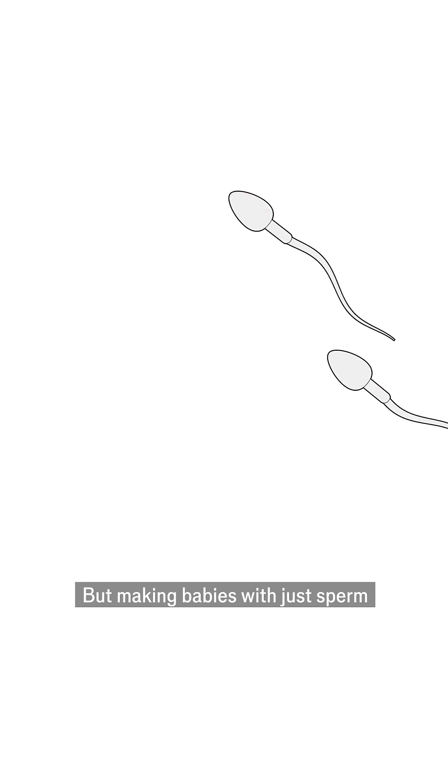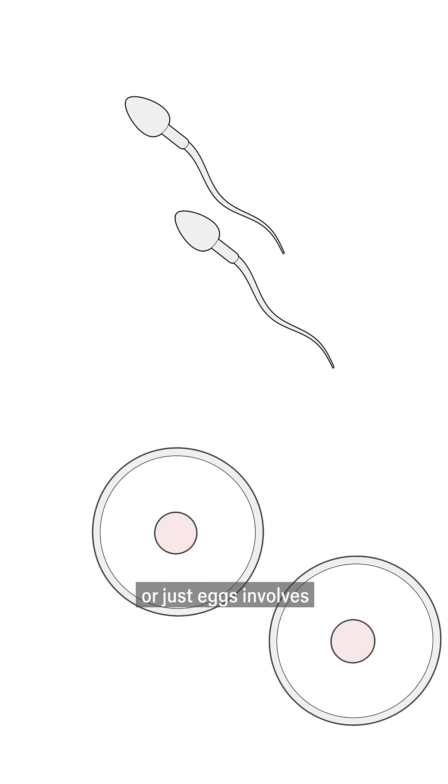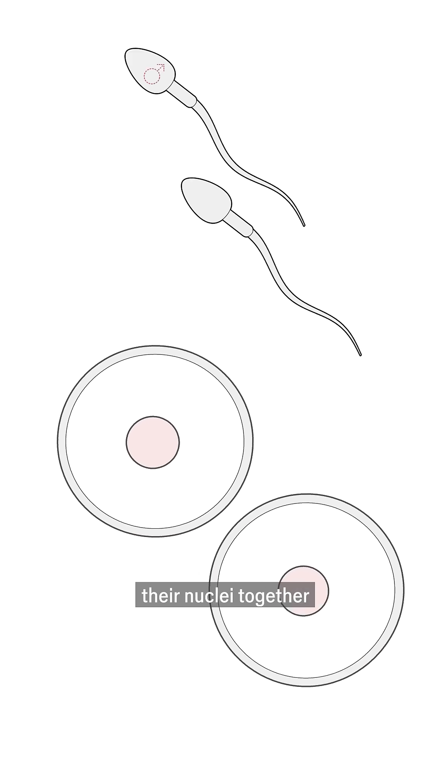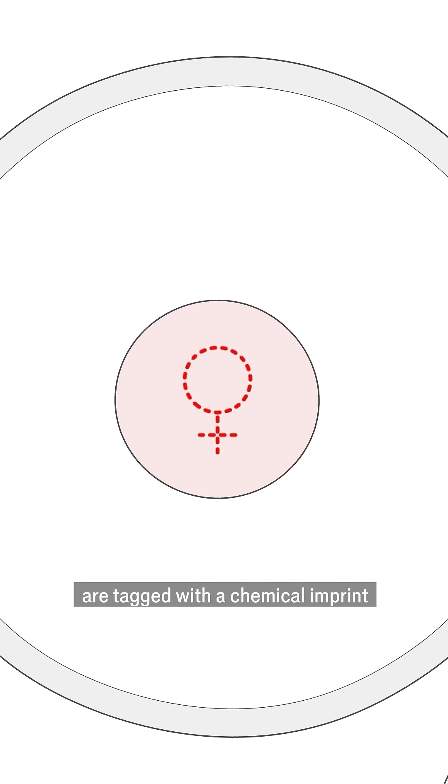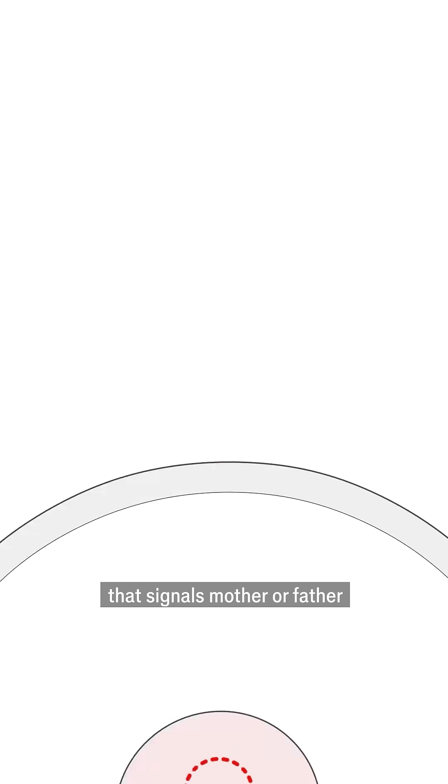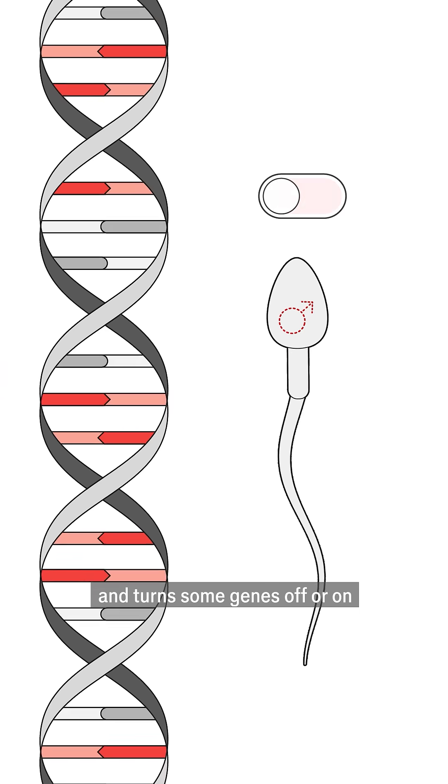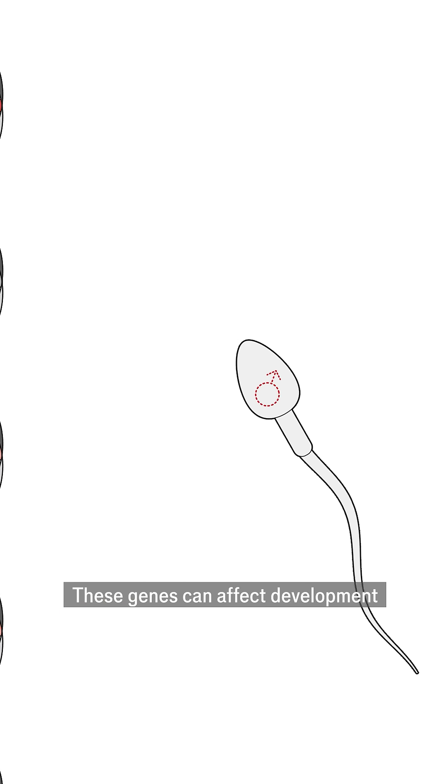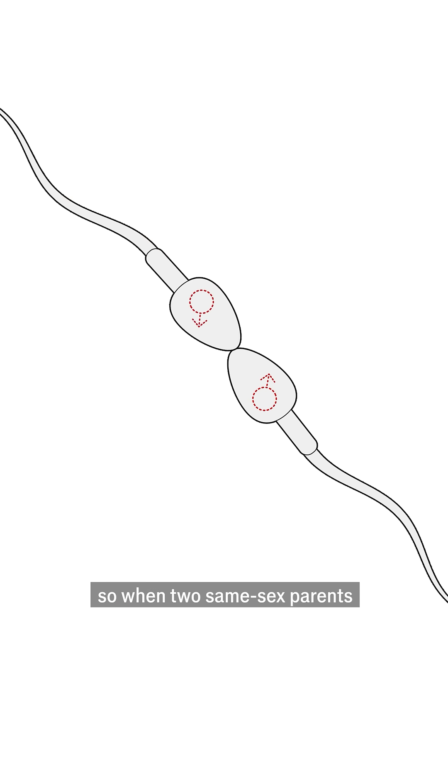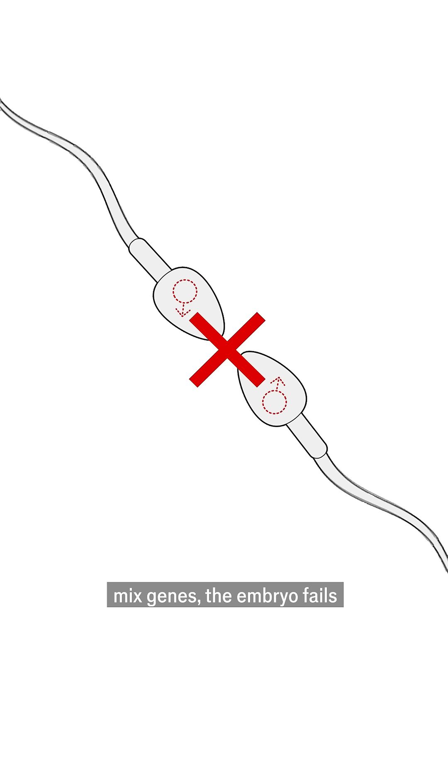But making babies with just sperm, or just eggs, involves more than bringing their nuclei together. That's because some parental genes are tagged with a chemical imprint that signals mother or father and turns some genes off or on. These genes can affect development, so when two same-sex parents mix genes, the embryo fails.